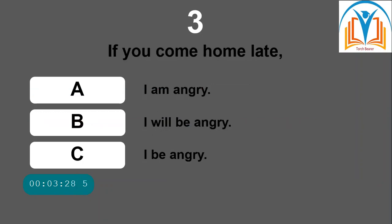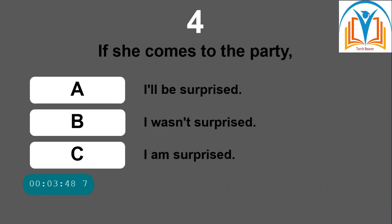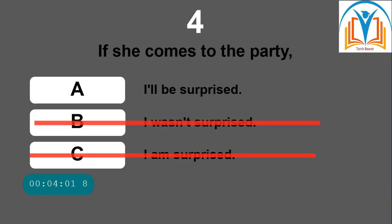Question three: 'If you come home late...' Option A: I am angry. Option B: I will be angry. Option C: I be angry. The answer is B — 'I will be angry.' Question four: 'If he comes to the party...' Option A: I will be surprised. Option B: I wasn't surprised. Option C: I am surprised. The answer is A — 'I will be surprised.'